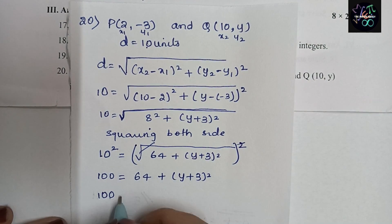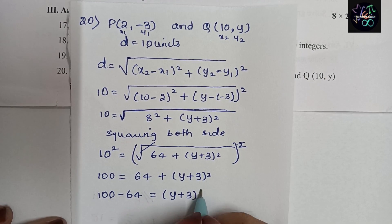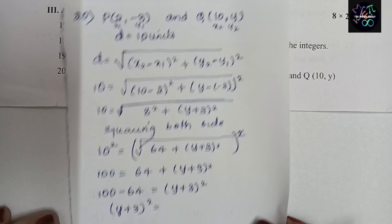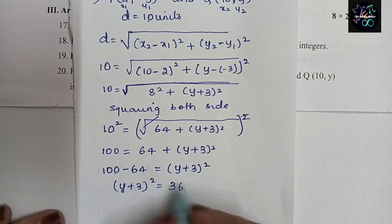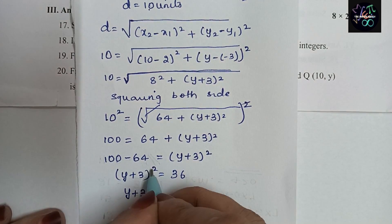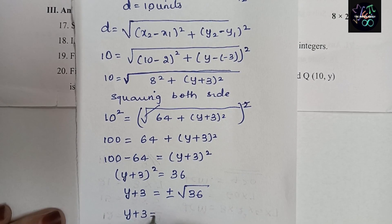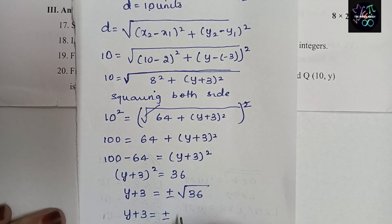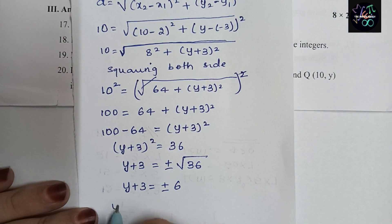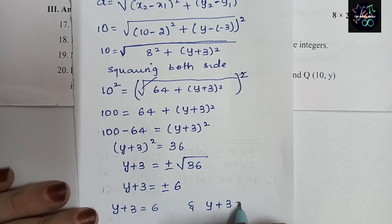Bringing 64 to the left side: (y + 3)² = 100 − 64 = 36. Taking the square root of both sides: y + 3 = ±√36 = ±6. So we have two cases: y + 3 = 6 and y + 3 = −6.